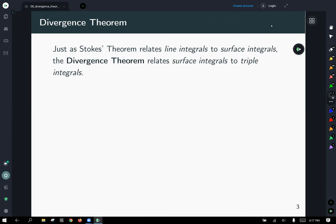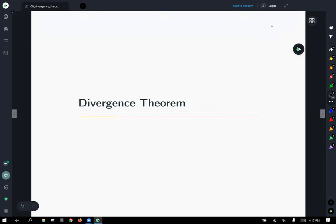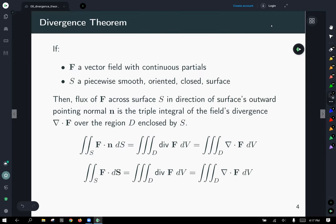So Stokes' theorem related line integrals to surface integrals. And the divergence theorem does something moderately similar. It takes surface integrals and relates them to triple integrals. So here's the statement of the divergence theorem. The criteria is that you need F to be a vector field with continuous partials. Our surface S needs to be piecewise smooth, it has to be oriented, and it has to be closed.